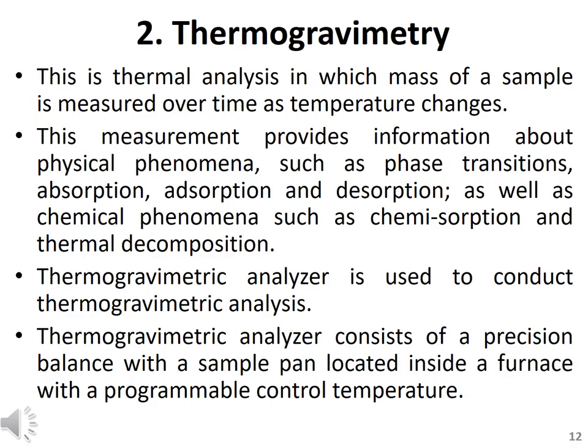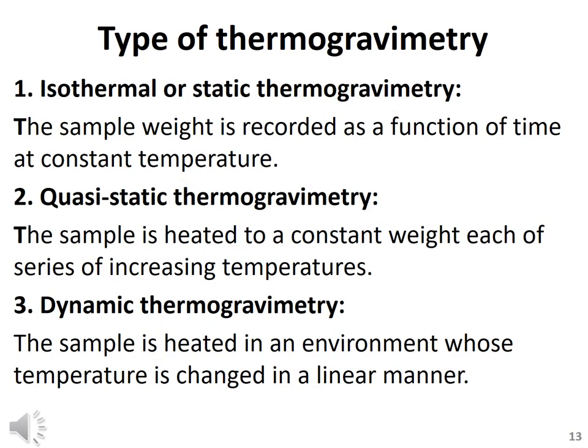Thermogravimetric analysis is a very useful technique for the study of polymer materials such as thermoplastics, thermosets, elastomers, composite materials, plastic films, fiber, coatings, and paints. TGA can be classified into three categories: isothermal or static TGA, quasi-static TGA, and dynamic TGA.